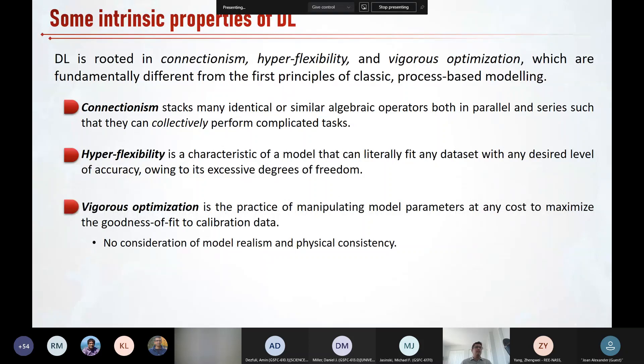And the last one, vigorous optimization is the practice of manipulating model parameters at any cost to maximize the goodness of fit to calibration data. In other words, the training of neural networks is all about minimizing an error function. Of course, optimization is also often an essential part in process based modeling to calibrate model parameters. However, in process based modeling, minimizing the error is not the goal, but a means to improve the realism of the model, at least in an ideal world.